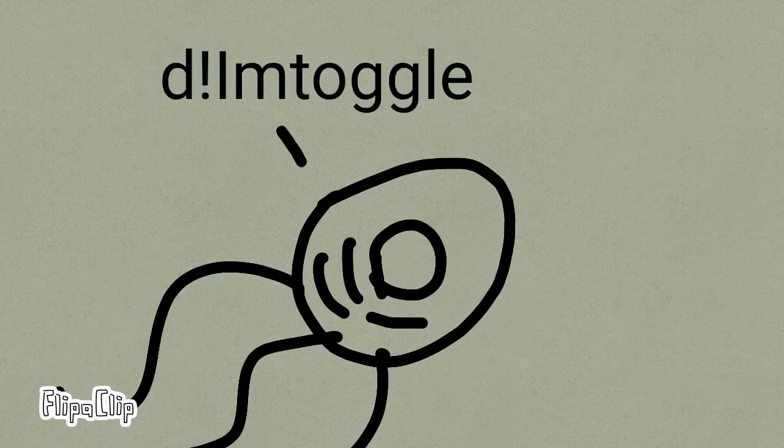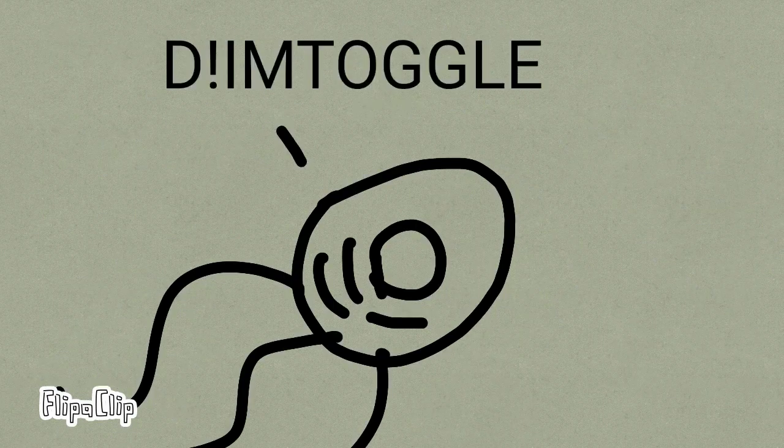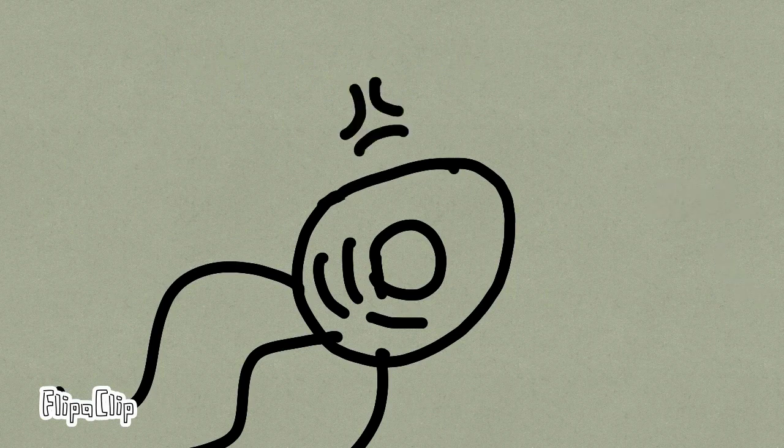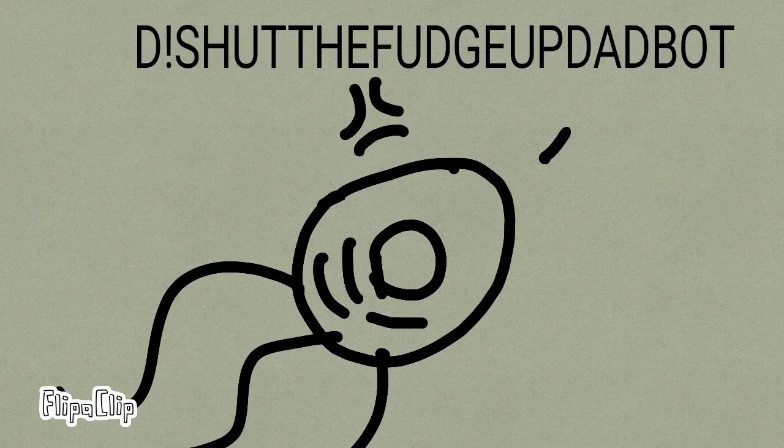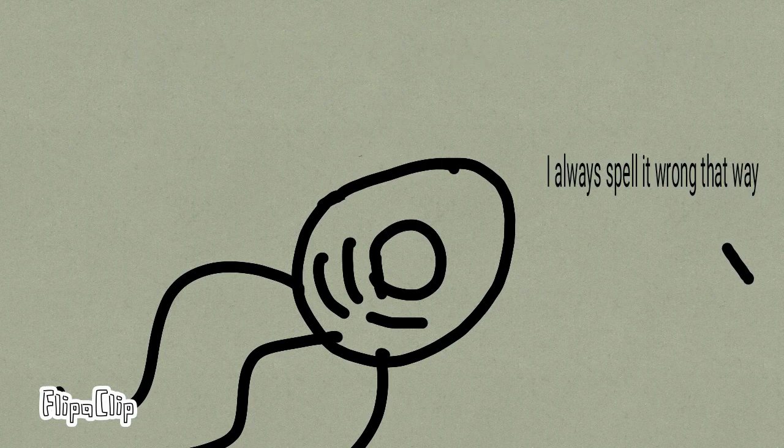D. Imtagl. D. I am Toggle. Amk. D. Shut the fudge up dad bot, I always spell it wrong that way.